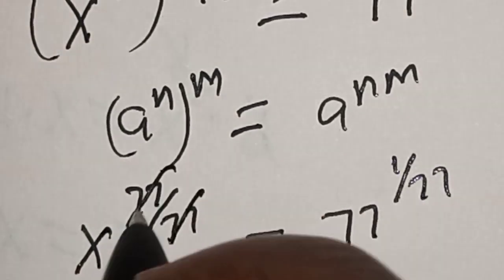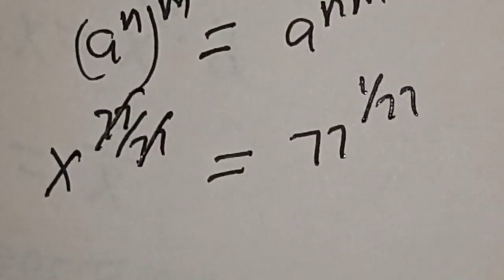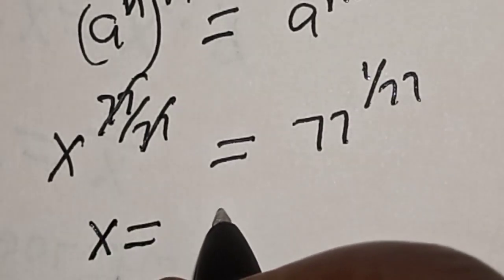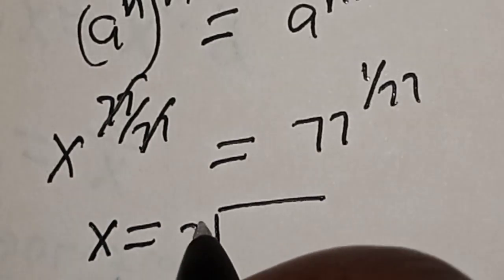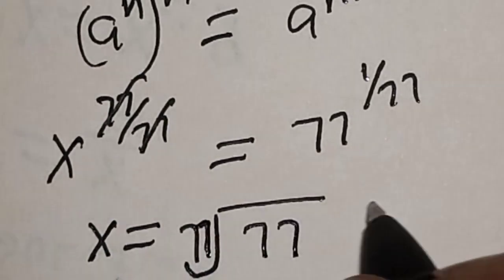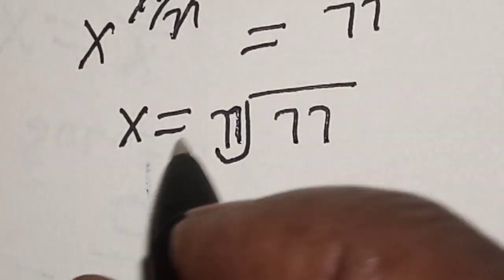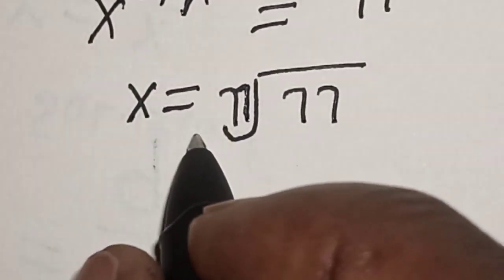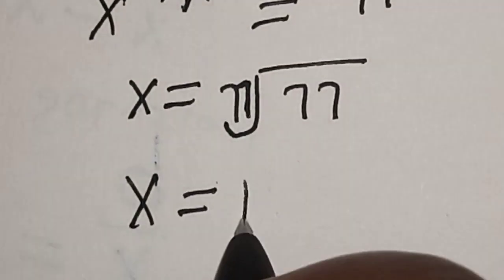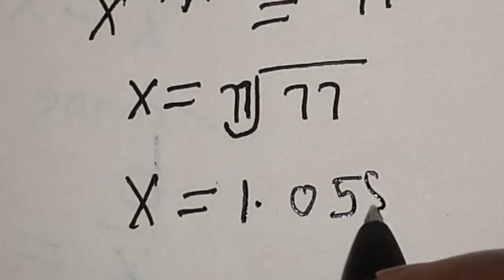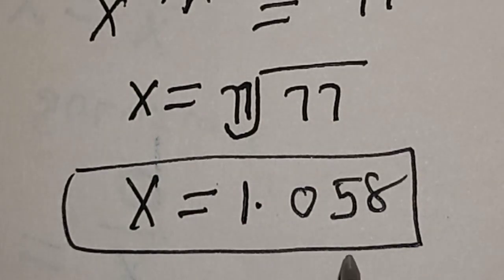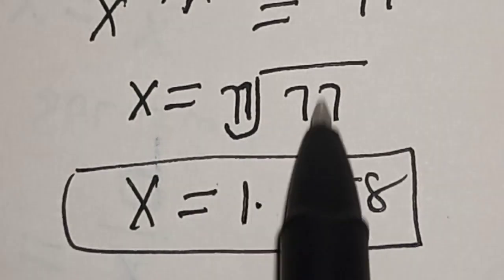This one will cancel this. Therefore, x is equal to the 77th root of 77. If you press your calculator, x is equal to 1.058. That is our final answer. If you enjoyed the class, please don't forget to like, share, comment, and subscribe.